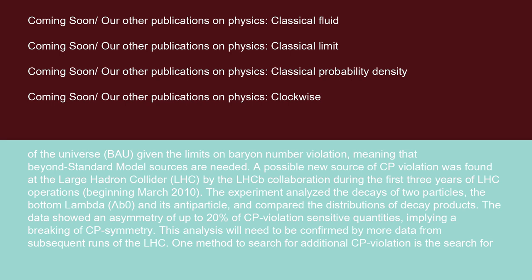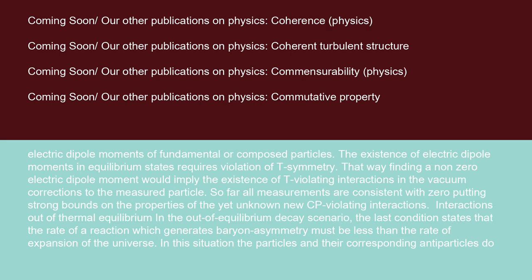One method to search for additional CP violation is the search for electric dipole moments of fundamental or composed particles. The existence of electric dipole moments in equilibrium states requires violation of T-symmetry. That way, finding a non-zero electric dipole moment would imply the existence of T-violating interactions in the vacuum corrections to the measured particle. So far, all measurements are consistent with zero, putting strong bounds on the properties of the yet unknown new CP-violating interactions.